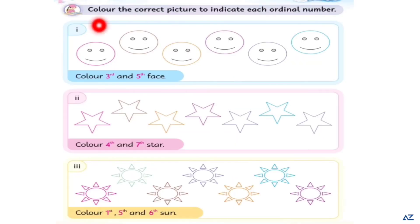Now color the correct picture to indicate each ordinal number. Color third and fifth face. 1, 2, 3, this is third face. You will color in this face. 4 and 5, this is number fifth face. So color in these faces.